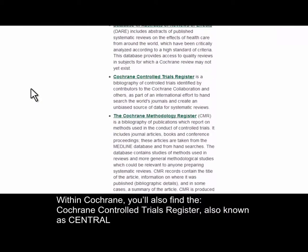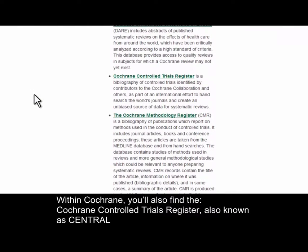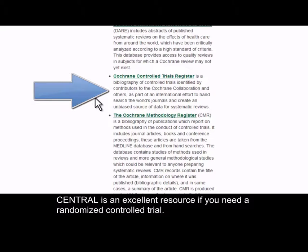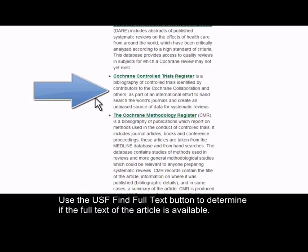Within Cochrane, you'll also find the Cochrane Controlled Trials Register, also known as Central. Central contains abstracts of randomized controlled trials from throughout the world and is an excellent resource if you need a randomized controlled trial. Use the USF Find Full Text button to determine if the full-text of the article is available.